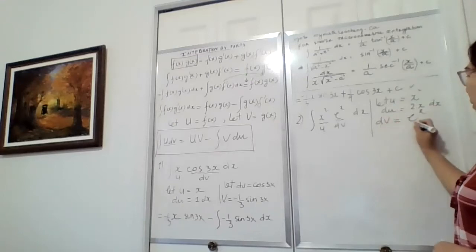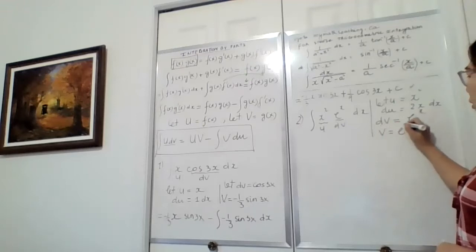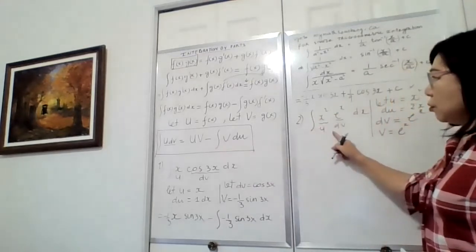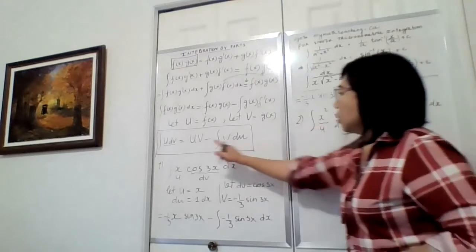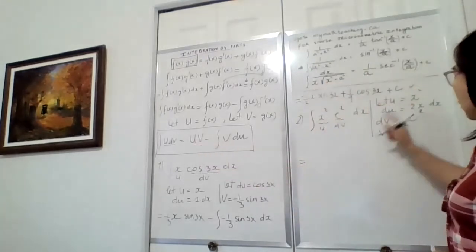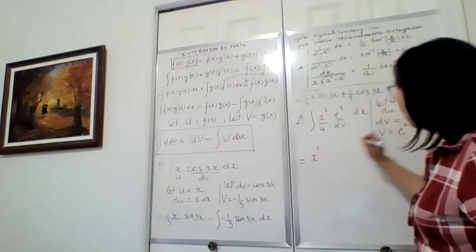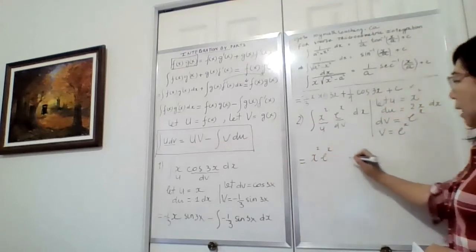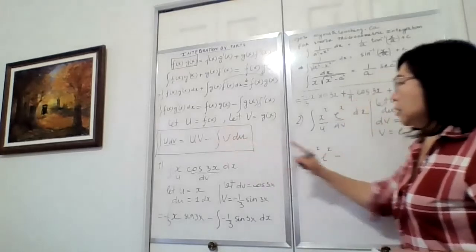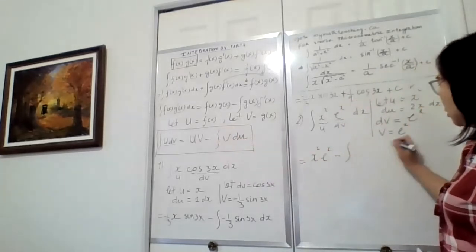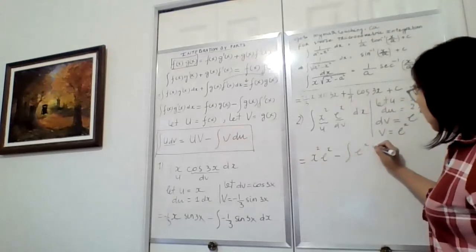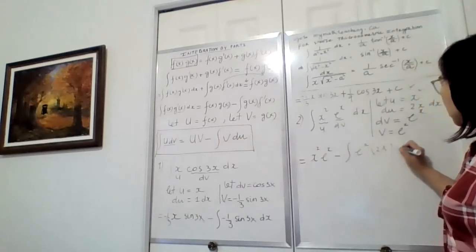And our dv will equal eˣ. Taking the anti-derivative of dv gives v, and the anti-derivative of eˣ is just eˣ. Now following the formula: ∫u dv equals u·v. Our u is x² and our v is eˣ, so we get x²eˣ minus the anti-derivative of v·du, which is eˣ times 2x dx.